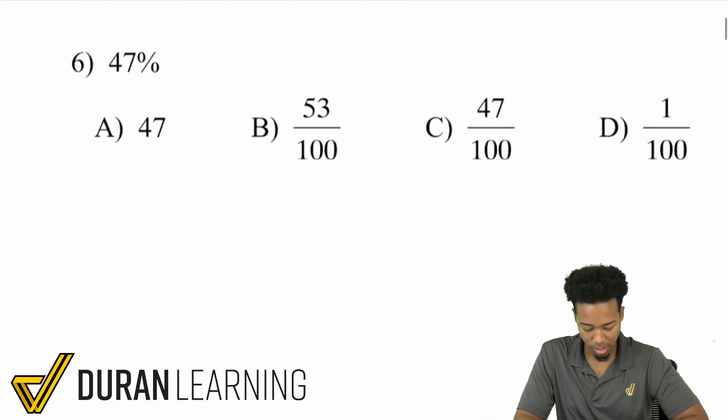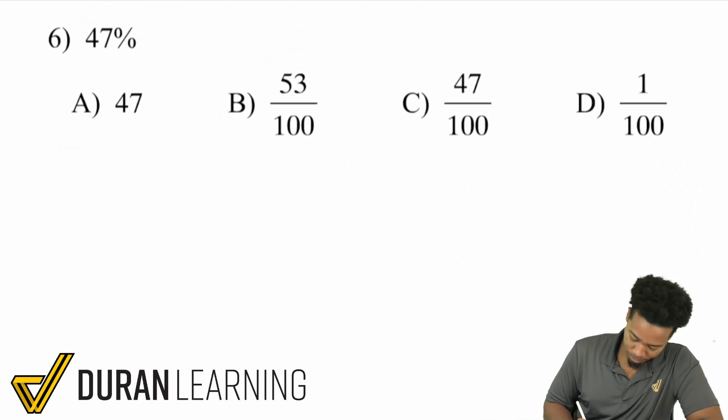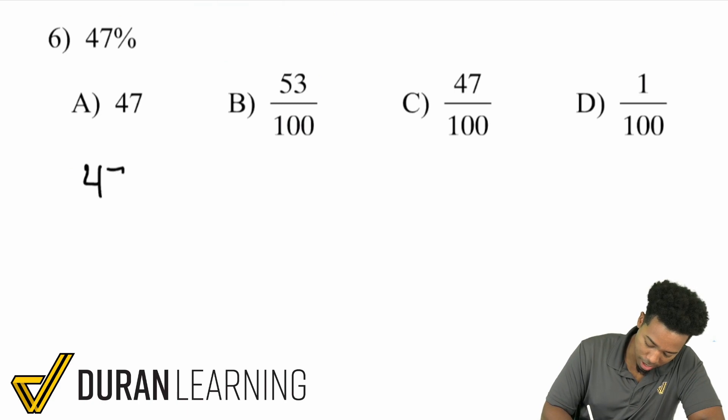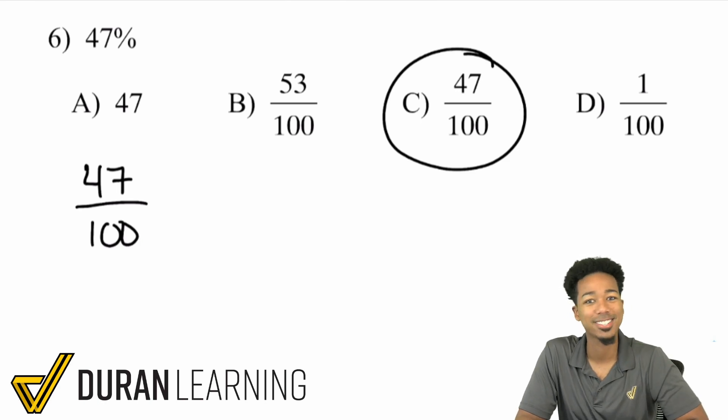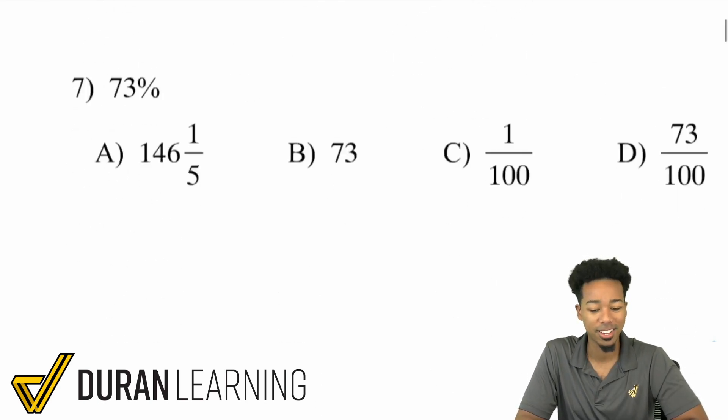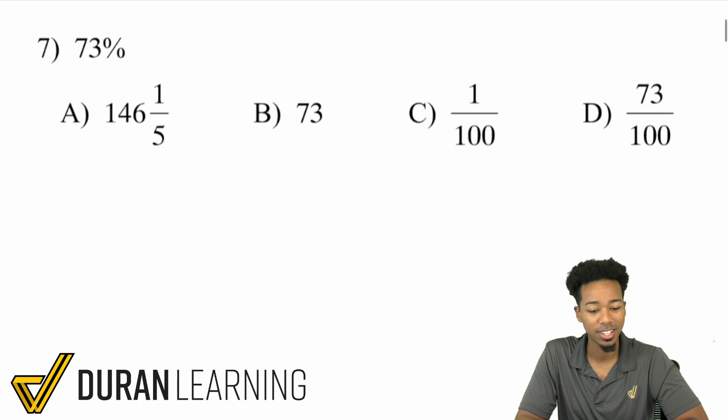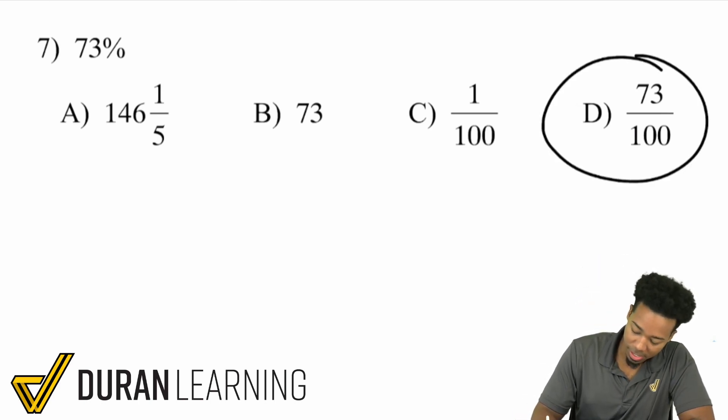Up next, number 6. 47%. Well, 47 is a prime number. So we have 47 out of 100. And that's really going to be it right there. Again, turning a percent to a fraction, super straightforward. Just divide it by 100 and you are good. 73%. That'd be 73 out of 100.